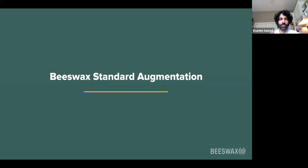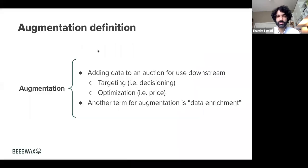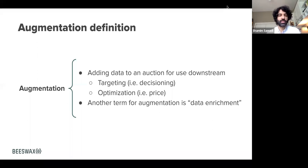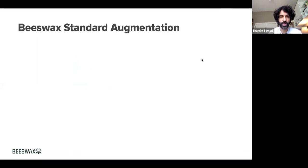Starting with standard augmentation, let's define what augmentation means. We think of it as adding data to an auction for use downstream — downstream meaning you may want to target on it, i.e., make a decision based off that additional data added to the auction, or optimize, such as changing your price based off that additional data. In other data science platforms it's called data enrichment — it's the same thing, adding data. We just call it augmentation.